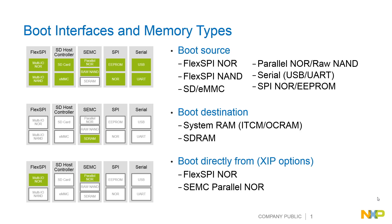The RT processors support a number of different boot sources as shown in the slide here. Most of these boot sources require that the memory be copied from the boot source to a destination memory, either the on-chip system RAM or an external SDRAM. For two different interfaces we support an XIP option, which is execute in place, where the application stays resident within the external memory and is not copied.